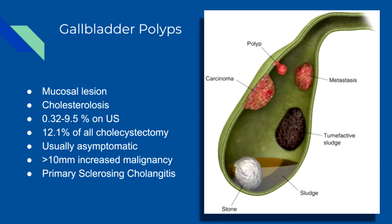Gallbladder polyps. A gallbladder polyp is a mural lesion that protrudes into the lumen of the gallbladder. Cholesterol polyps are the most common type of polyps. They typically measure less than 10 millimeters and may be solitary or multiple.